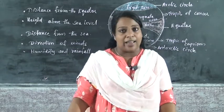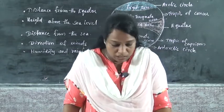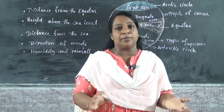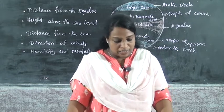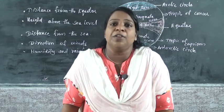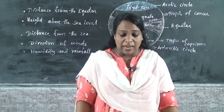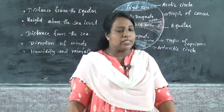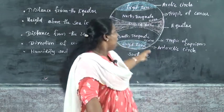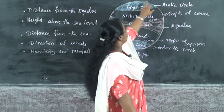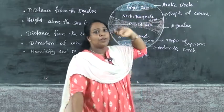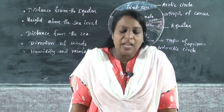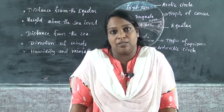The temperate zone is lying in between, and the climate there is sometimes hot and sometimes cold. The frigid zone is the area lying between the arctic circle and the north pole in the northern hemisphere.